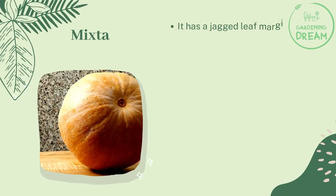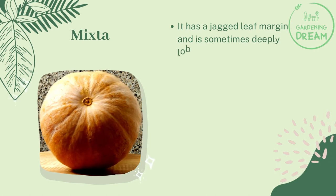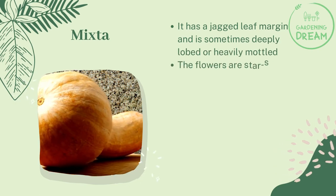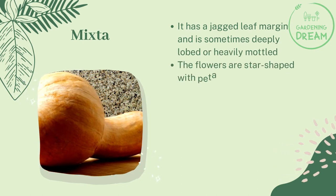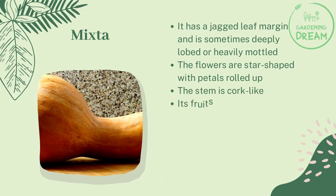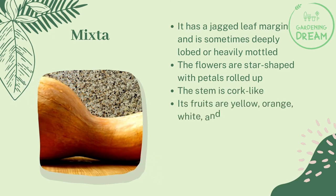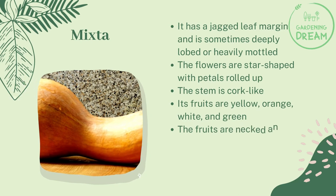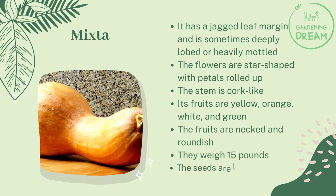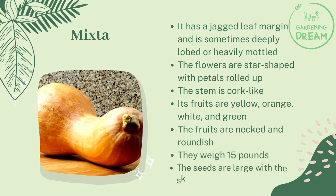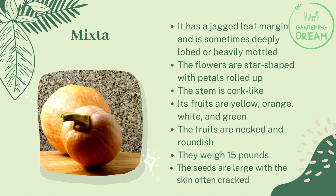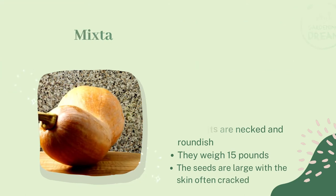Mixta: It has a jagged leaf margin and is sometimes deeply lobed or heavily mottled. The flowers are star-shaped with petals rolled up. The stem is cork-like. Its fruits are yellow, orange, white, and green. The fruits are necked and roundish. They weigh 15 pounds. The seeds are large with the skin often cracked.